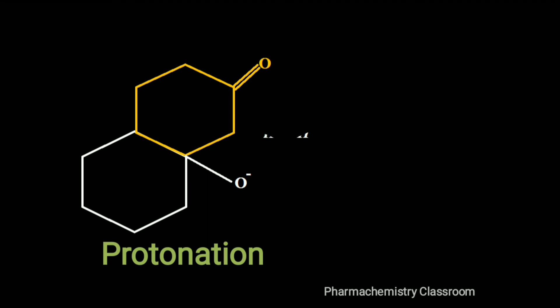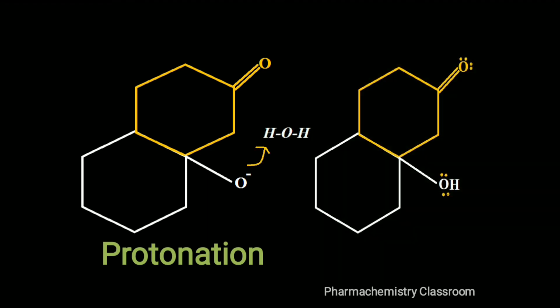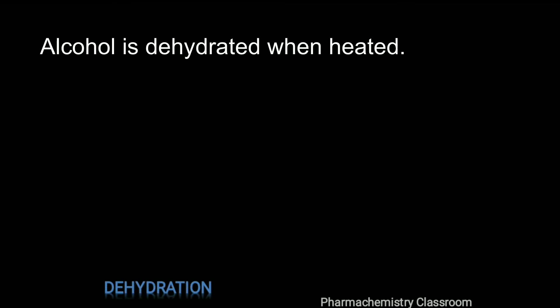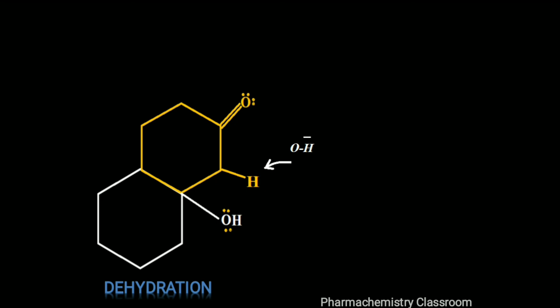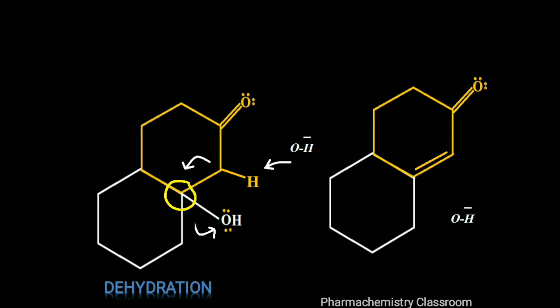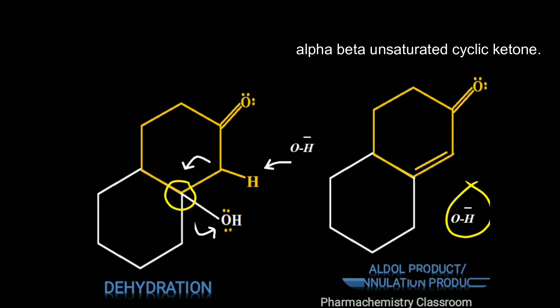The six-membered alkoxide ion undergoes protonation. The alkoxide formed gets protonated and we are getting an alcohol along with an OH minus ion. The next step is dehydration of the formed alcohol. When heated, an alpha hydrogen is removed by the OH minus formed in the last step, and from the beta position the OH minus leaves the ring, giving the aldol condensation product. This completes the Robinson annulation reaction, yielding an alpha-beta unsaturated cyclic ketone.